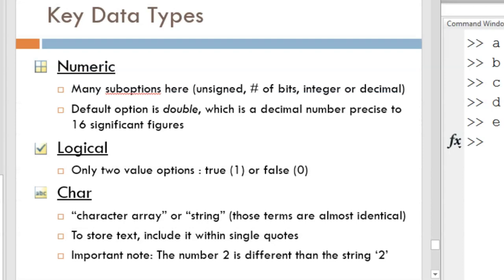The three key data types are numeric, logical, and character. The symbol that MATLAB shows in the workspace next to a variable name indicates what data type that variable is. Those symbols are shown in this slide.